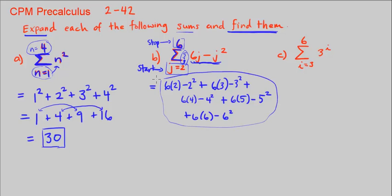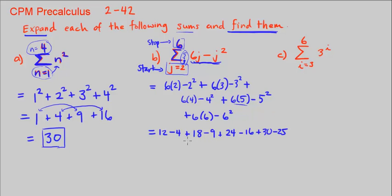And now let's just go ahead and simplify this. We can use the calculator or do it by hand. So 6 times 2 is 12 minus 2 squared is 4. Plus, 6 times 3 is 18 minus 3 squared is 9. Plus, 6 times 4 is 24 minus 4 squared is 16. Plus, 6 times 5 is 30 minus 5 squared is 25. Plus, 6 times 6 is 36 minus 6 squared is minus 36. So then let's just add these. Right away I can see 36 and negative 36 cancel out.